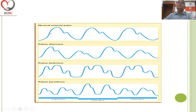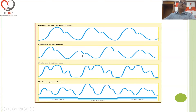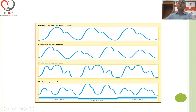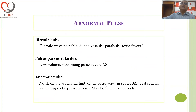Looking at these cartoons: the normal pulse has a percussion wave and a dicrotic wave. In pulsus alternans, note that alternate beats are of higher and lower volume. In pulsus bisferiens, there are two peaks in systole — the percussion wave and the tidal wave are both seen — then the dicrotic wave. In pulsus paradoxus, some pulse beats are lower in volume, and you can see that the ones lower in volume are in inspiration. We also have terms like dicrotic pulse, pulsus parvus et tardus, and anachrotic pulse.